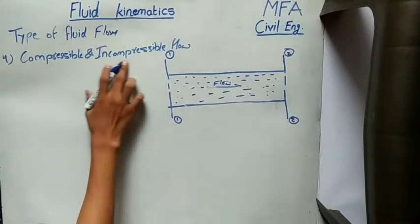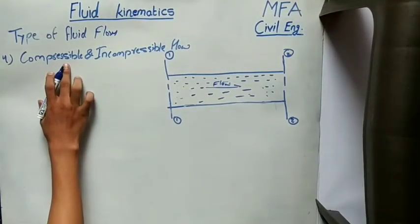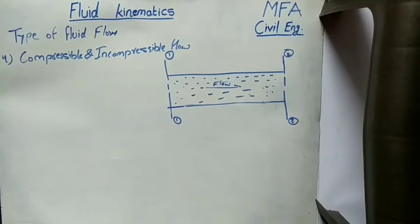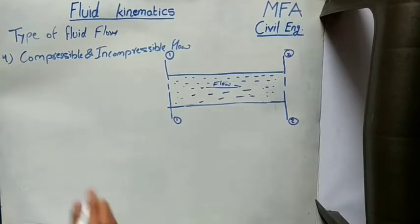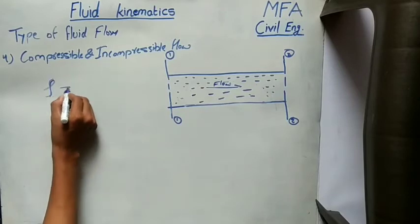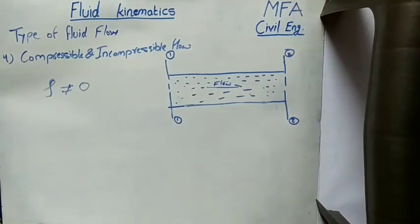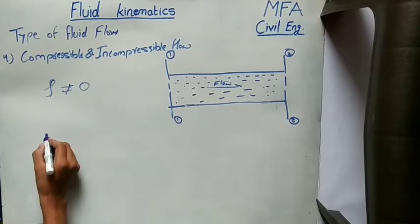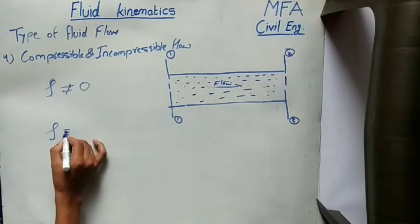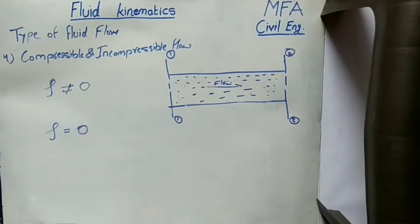Fourth is compressible and incompressible flow. Compressible flow is that type in which the density of a fluid changes from one point to another; in other words, the density does not remain constant. Mathematically, density is not constant. Incompressible flow is that type in which the density of a fluid remains constant and does not change from one point to another. Mathematically, density is equal to a constant.